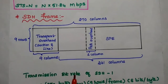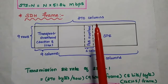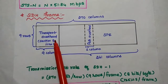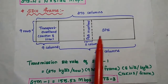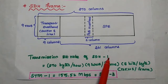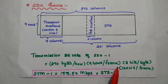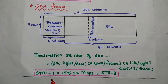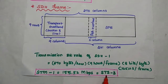The SDH frame structure is similar to SONET but consists of 270 columns and 9 rows. The first 9 columns comprise the transport overhead, which includes section overhead and line overhead. The remaining 261 columns form the SPE, with one column for path overhead. The transmission bit rate of STM-1 is calculated as 270 bytes/row × 9 rows/frame × 8 bits/byte ÷ 125 µs/frame = 155.52 Mbps, which equals STS-3.